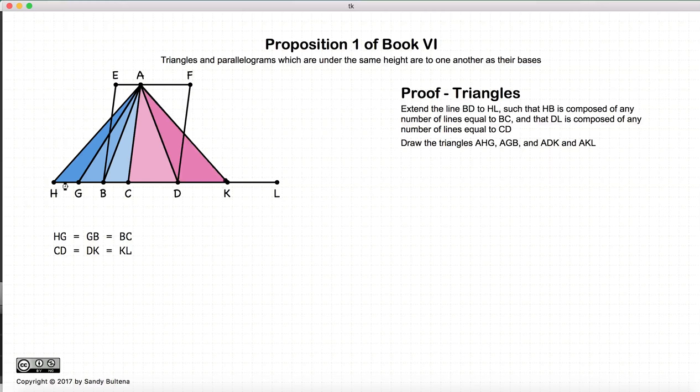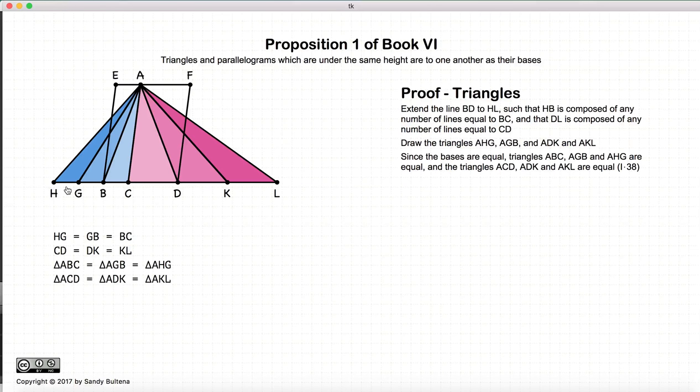So now I'm going to draw some more triangles. And let's look firstly at these blue triangles. The bases are all equal. The height for all of these triangles is equal or is the same. And consequently, the area of each of these triangles is equal. Proposition 38, Book 1.